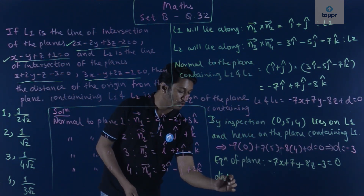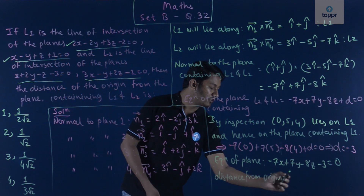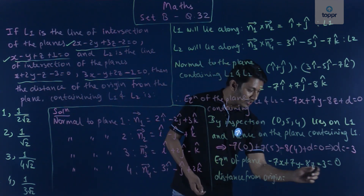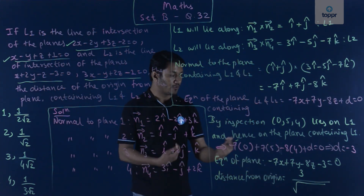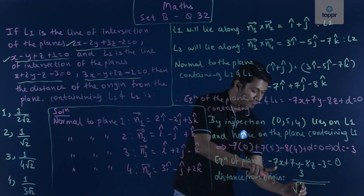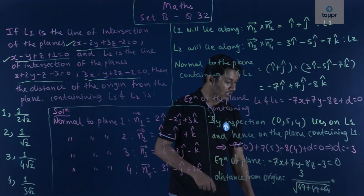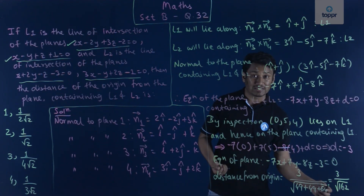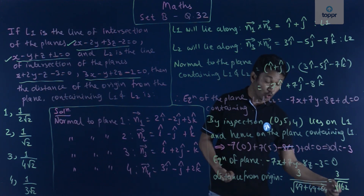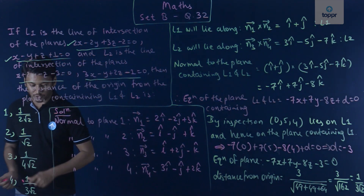The distance from the origin is |d| / √(7² + 7² + 8²) = 3 / √(49 + 49 + 64) = 3 / √162. Since √162 = 9√2, the distance is 3 / (9√2) = 1 / (3√2). This matches option number 4.